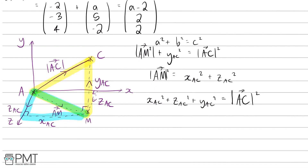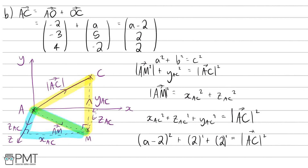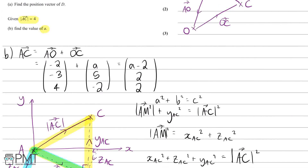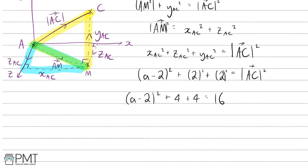We now substitute in the components of AC. The i-component (x) is a minus 2, the k-component (z) is 2, and the j-component (y) is 2. So we have: (a − 2) squared plus 2 squared plus 2 squared equals the modulus of AC squared. Since the modulus of AC is 4, that squared is 16. So: (a − 2) squared plus 4 plus 4 equals 16.